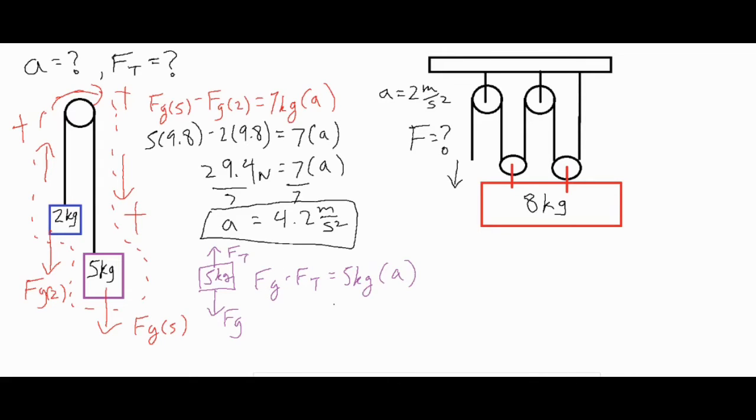The FG for the five kilogram object is still five times 9.8, so we're going to call that 49 minus FT equals five times a. But we have our a, our a is 4.2, so five times 4.2 is going to be 21 newtons. Subtract 49 from both sides and then you have negative FT equals negative 28 newtons, and then the negatives drop out.